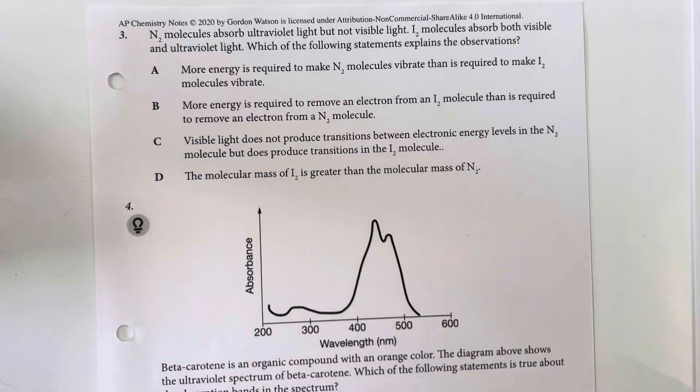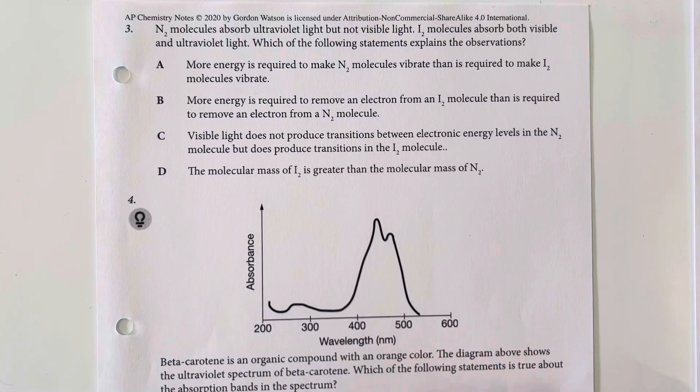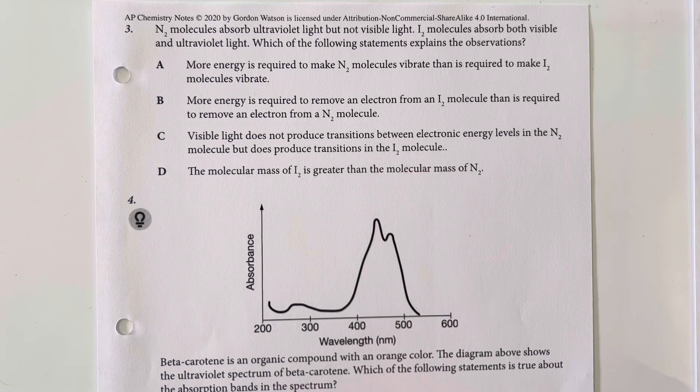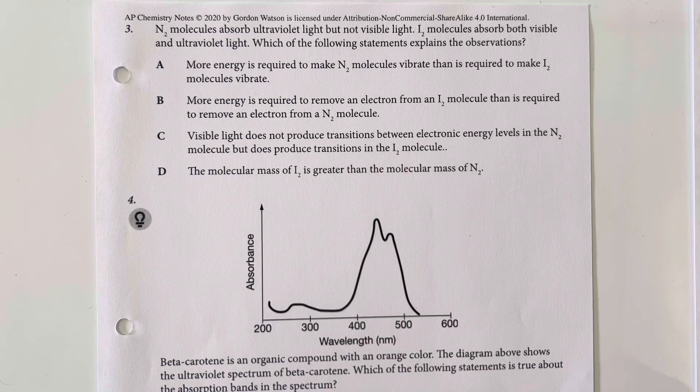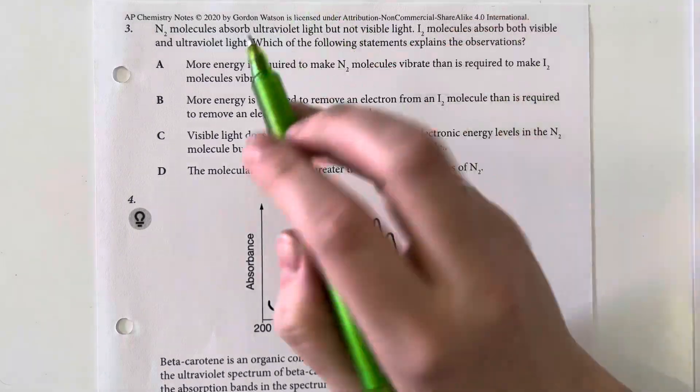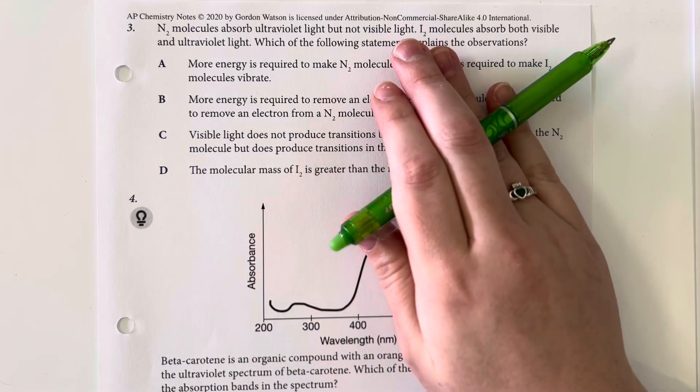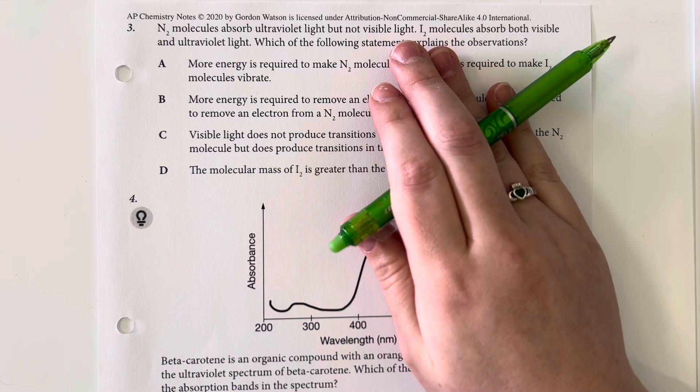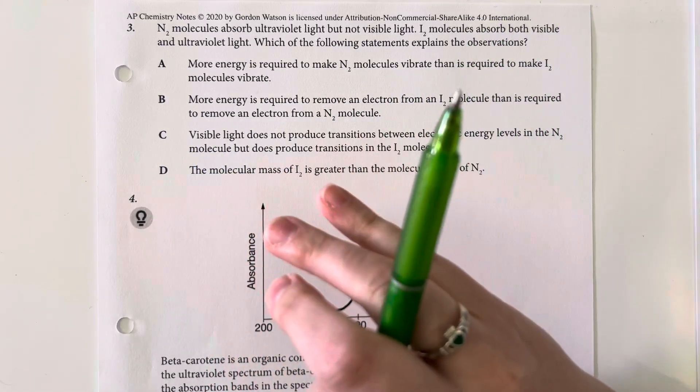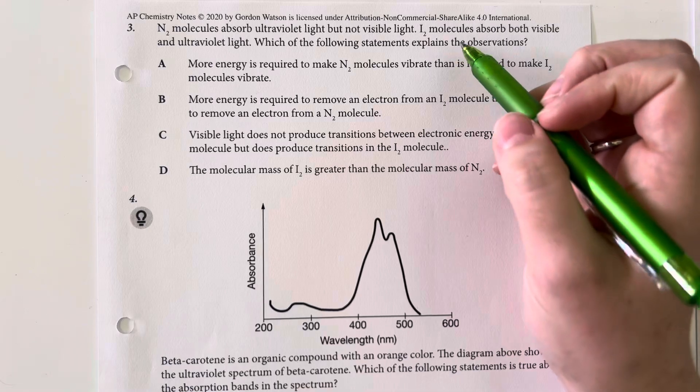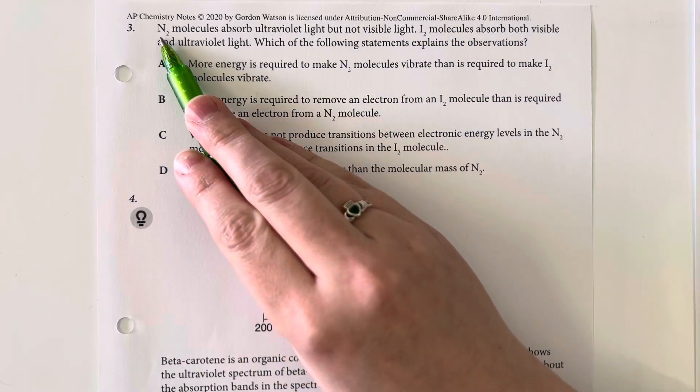So, nitrogen molecules absorb ultraviolet light, but not visible light. Iodine molecules absorb both visible and ultraviolet light. Which of the following statements explains the observations? So, ultraviolet light is going to have a higher energy state. We have a shorter wavelength, higher energy, and are able to impact our iodine versus our nitrogen.